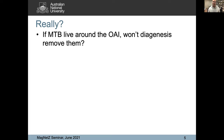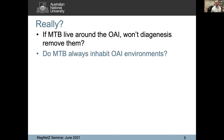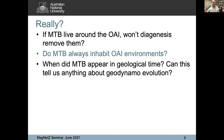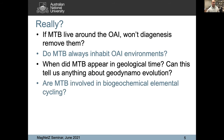My first question is: if magnetotactic bacteria live around an OAI, won't diagenesis remove them? It's a redox zonation, and when you get into reducing sediments, sulfidic sediments are corrosive to magnetite — so they should dissolve. Do they always inhabit OAI environments? Other questions: when did they appear in the geological record, and does that tell us anything independent about the geodynamo and its evolution? When you see pictures of bacteria swimming up and down across a redox zonation, I've always wondered why they do that. Is it the electron transfer through moving through these redox zones giving them energy, or are they involved in biogeochemical cycling?